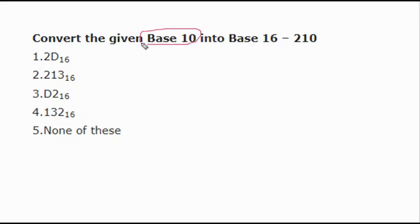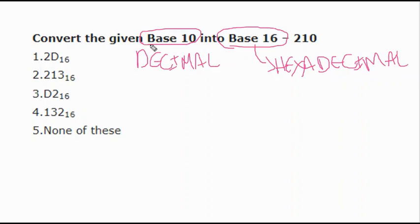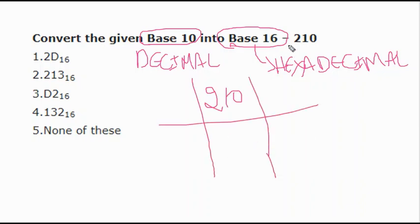The next question says 'convert the given base 10 into base 16.' Base 10 is nothing but decimal, and base 16 is nothing but hexadecimal. These are different nomenclatures used to confuse you. If you know the terminology, you can easily solve this. The number 210 is in decimal form.